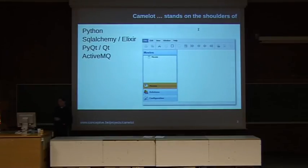Camelot is built with Python and relies on standard Python libraries. A very important part is SQLAlchemy, which is an object relational mapper in Python with powerful support for inheritance. Elixir is used to make defining object relational mappings very easy, as easy as defining plain old Python objects. For the graphical part, PyQt is used.